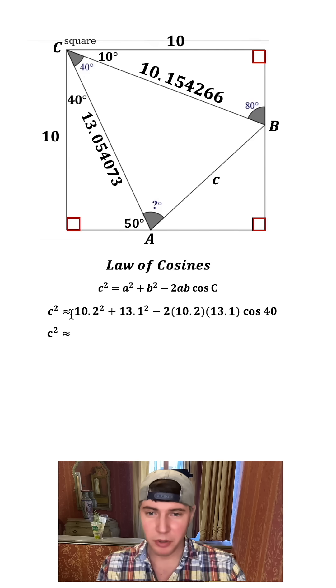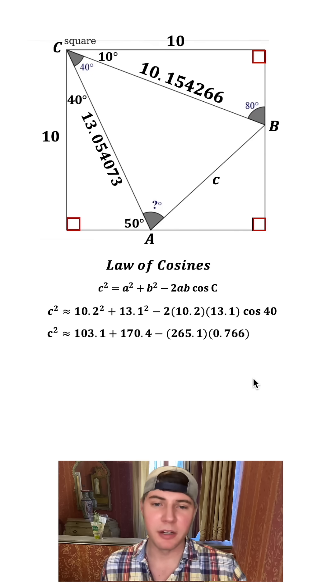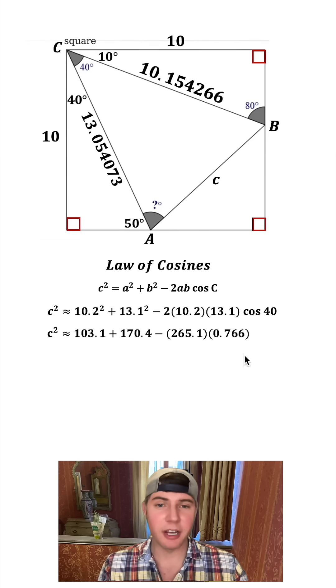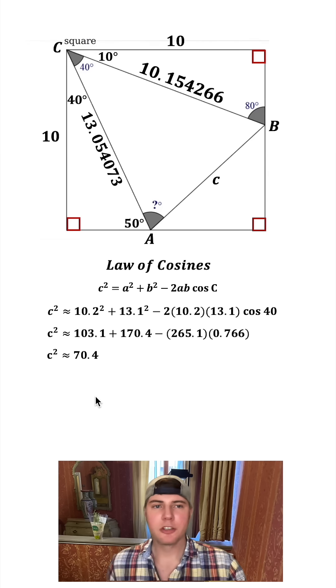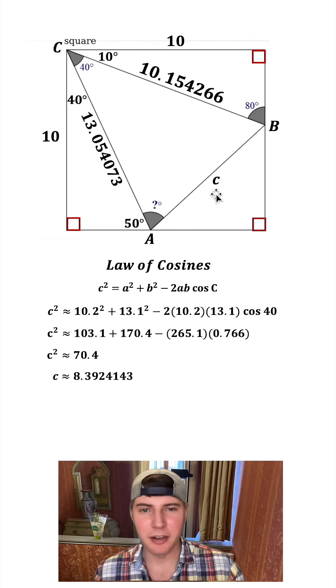And then 10.2 squared is approximately 103.1. This is approximately 170.4. And then we're going to subtract all this, which is 265.1. And cosine of 40 is approximately 0.766. So after we plug all this into a calculator, we get 70.4. Square root of both sides, and we get a value for C. It's approximately 8.39, and I will plug it in up here.